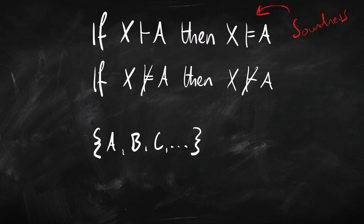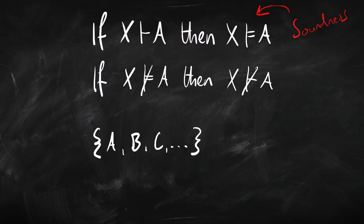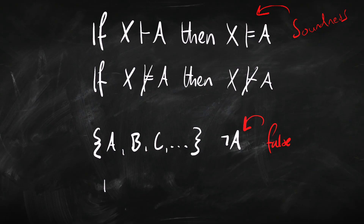There's an interesting relationship between satisfiability and entailment. Suppose we have a set of sentences A, B, C and so on that is satisfiable — all of those sentences can be true together. Some valuation V satisfies this set, making all of them true. In particular, it makes A true, so it makes not-A false. That means the other sentences B, C, and so on don't entail not-A, because some valuation makes those true but not-A false.